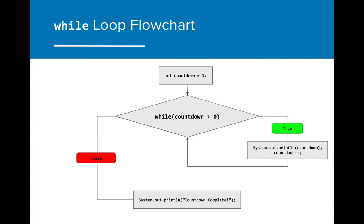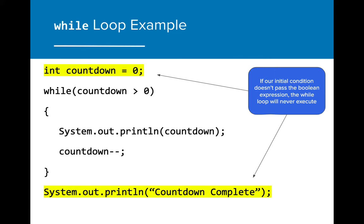Here is a look at that problem as a flowchart. Even if we have a while loop in our program, there is a possibility that it never executes at all. If the value of countdown starts at zero, then the initial while loop condition is false and the while loop will never be executed. The only code that will execute in this case is the countdown complete print statement.